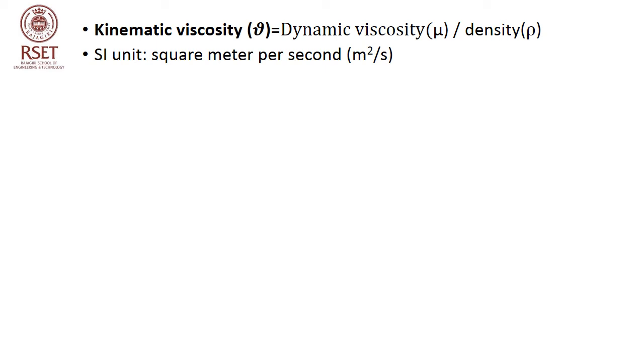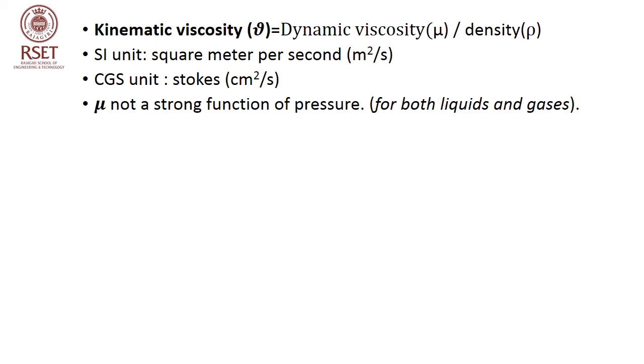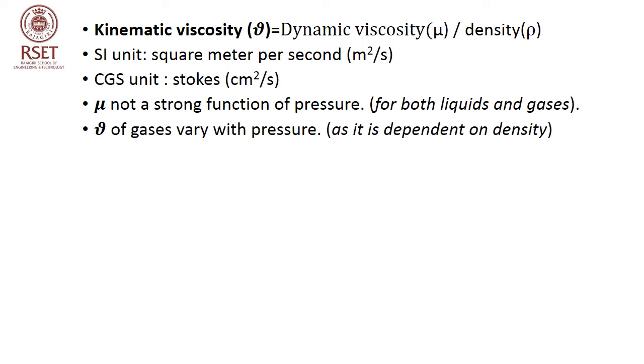An important related quantity is kinematic viscosity, defined as the ratio between dynamic viscosity and the density of the fluid. Its SI unit is meter square per second, and the CGS unit is centimeter square per second, called Stokes. While dynamic viscosity mu does not vary much with pressure, kinematic viscosity varies with pressure since it depends on density.